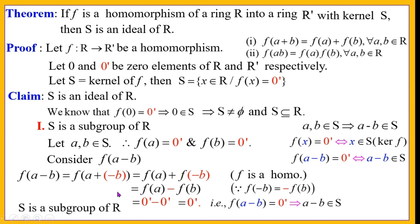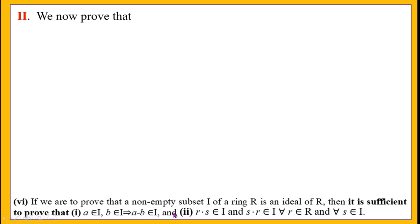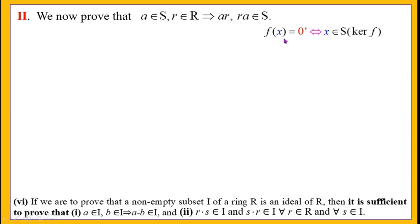The first condition is complete. Now we have to show the second condition: that a in S and r in R implies both ar and ra belong to S, meaning S is both a left ideal and right ideal of R. Since f(x) = 0' if and only if x belongs to S, to show ar and ra belong to S we need to show f(ar) = 0' and f(ra) = 0'.